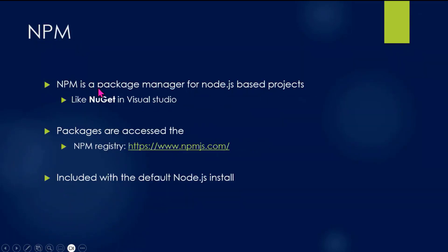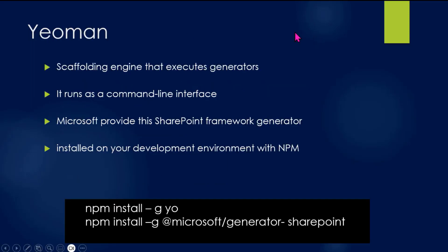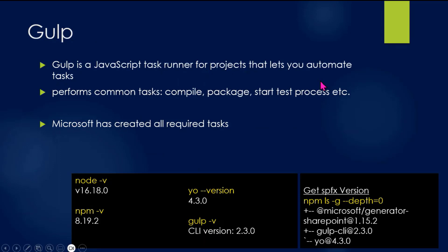NPM is a package manager for Node.js. It handles package management and file watching, and runs as a command line interface. Gulp is a JavaScript task runner that lets you automate tasks.